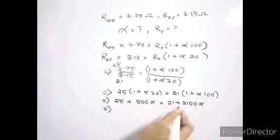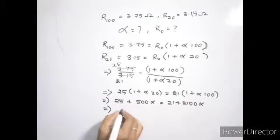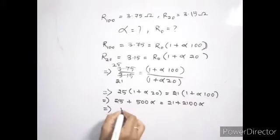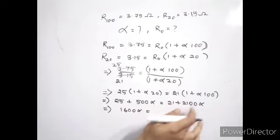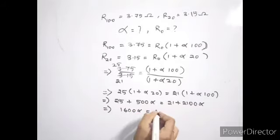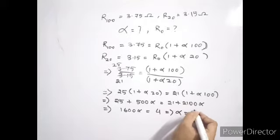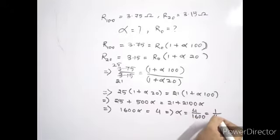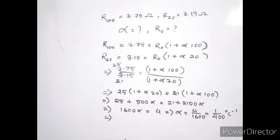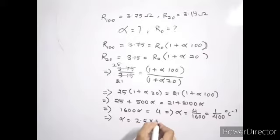Rearranging, we get 1600 alpha equals 25 minus 21, which is 4. So alpha equals 4 divided by 1600, which is 1 by 400 degrees Celsius inverse — that is 2.5 times 10 to the power minus 3 degrees Celsius inverse.